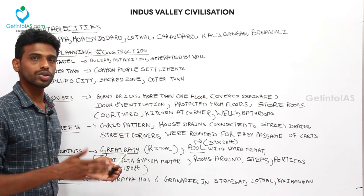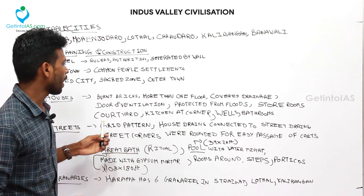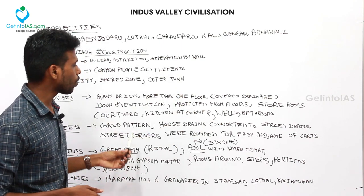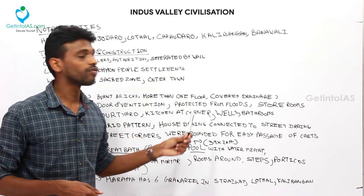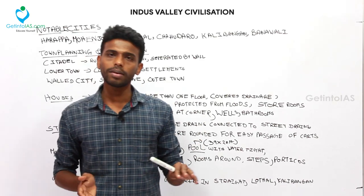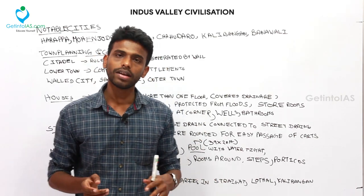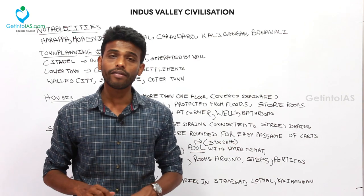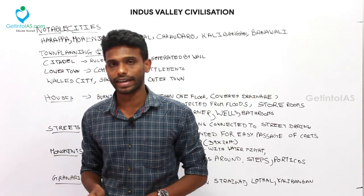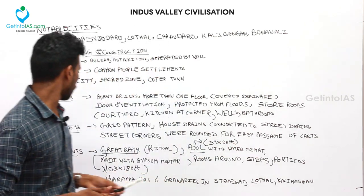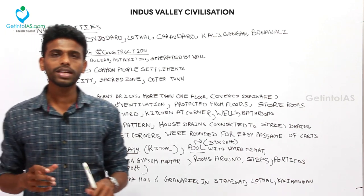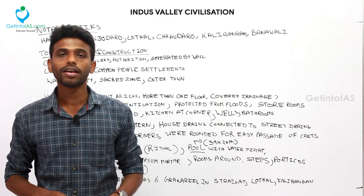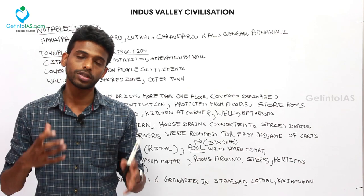The streets were in a grid pattern with houses on both sides. House drains were connected to street drains. The street corners were rounded for the easy passage of carts, giving greater flexibility to cart drivers.